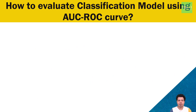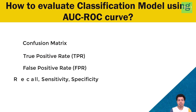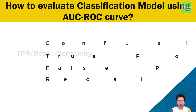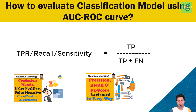Before jumping onto AUC-ROC curve, we should be aware of certain concepts: confusion matrix, true positive rate, false positive rate, recall, sensitivity, specificity, etc. True positive rate, recall, and sensitivity are one and the same thing. The formula for all three is: True Positive divided by True Positive plus False Negative. I have already created a video on confusion matrix, precision, and recall, so you can watch that video to acquire the necessary knowledge.